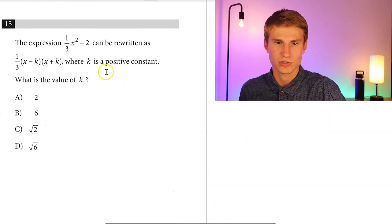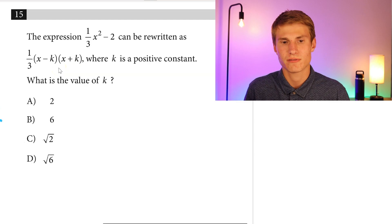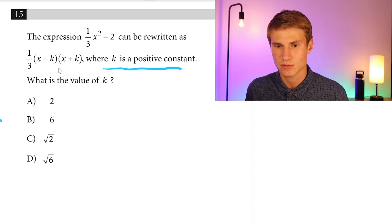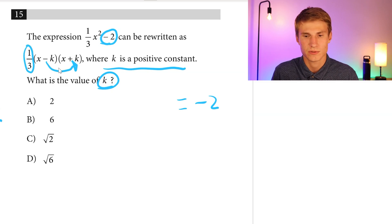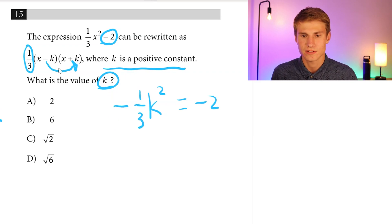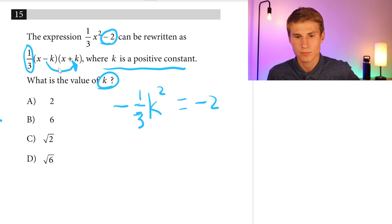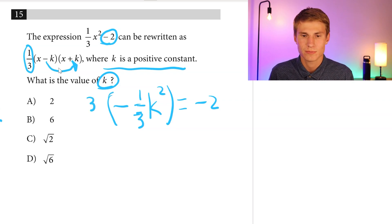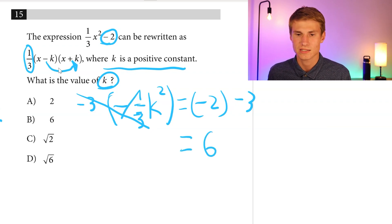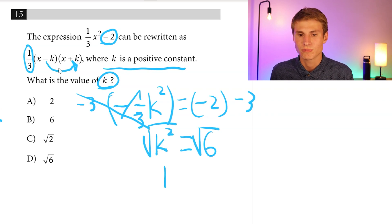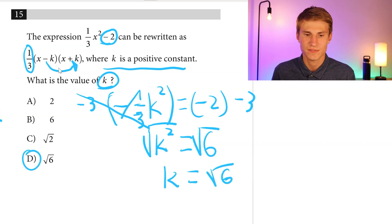Number fifteen, the last multiple choice question: one third x squared minus 2 can be rewritten as one third times (x minus k)(x plus k). What is the value of k? Setting negative 2 equal to one third times negative k squared, I move the negative sign: negative one third k squared equals negative 2. Multiplying each side by negative 3 isolates k squared: k squared equals 6. Taking the square root gives k equals the square root of 6. Our answer is D.